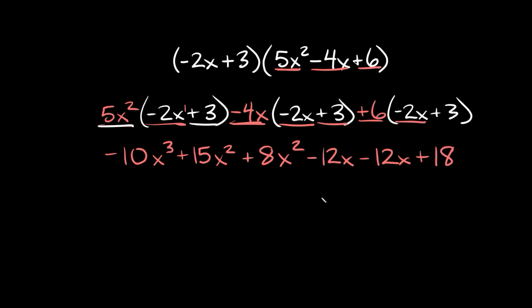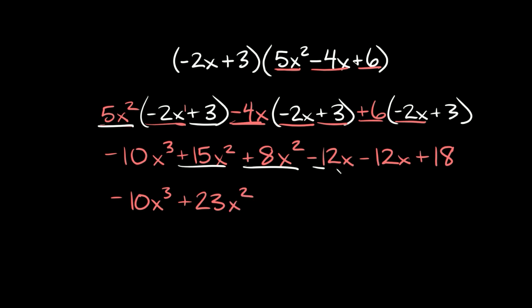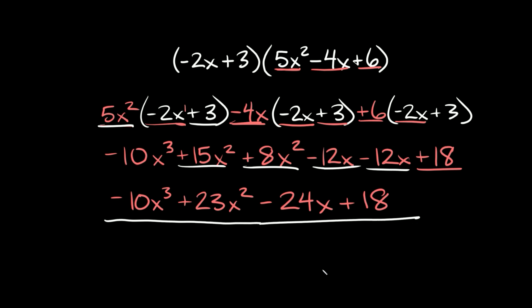Now that we've multiplied everything out, we combine like terms. The x cubed term, negative 10x cubed, is alone. For x squared: 15 plus 8 equals 23x squared. For x: negative 12x minus 12x equals negative 24x. And lastly, plus 18. Everything is combined, so your final answer is negative 10x cubed plus 23x squared minus 24x plus 18.